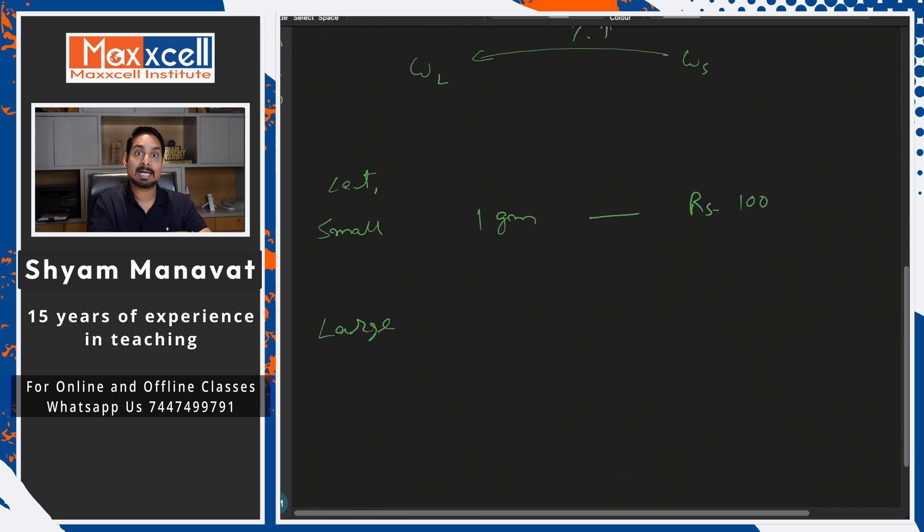the large box per gram weight is 12% less compared to the smaller one, per gram weight. So for 1 gram, the large box entire packet is not 1 gram, per gram calculation I am doing because question said. So for large box, 1 gram price is 12% less that means it should be 88 rupees. Clear? It should be 88 rupees.